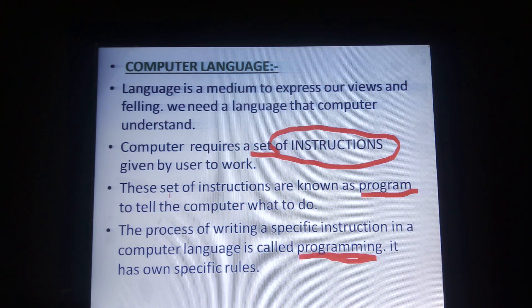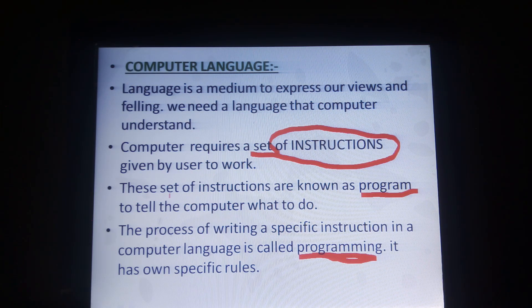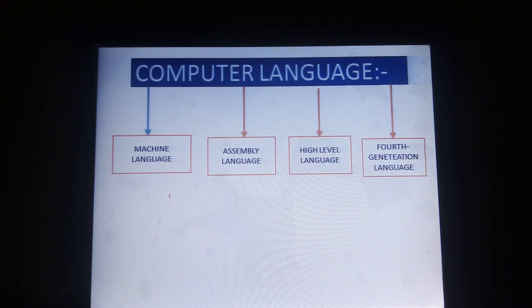Programming has specific rules, just like English language has grammar and specific rules. So computer language also has some specific rules. Computer language is basically divided into four categories: machine language, assembly language, high-level language, and fourth generation language.